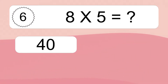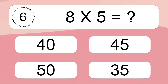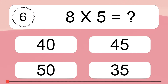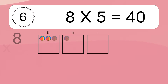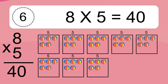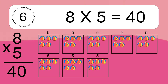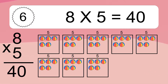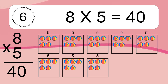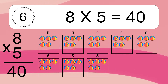8 times 5 equals what? 8 times 5 equals 40. We have 8 boxes, and each box has 5 colorful balls inside. If you count all the balls in all the boxes together, you will have 8 times 5 balls. This equals 40 balls.